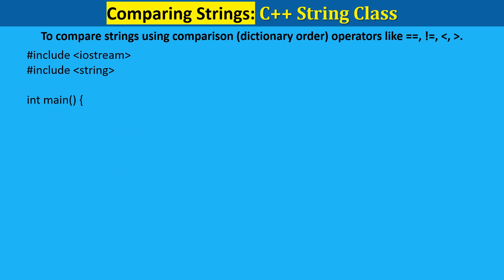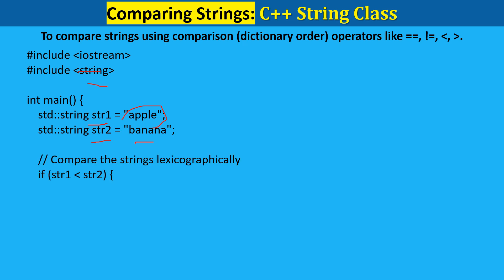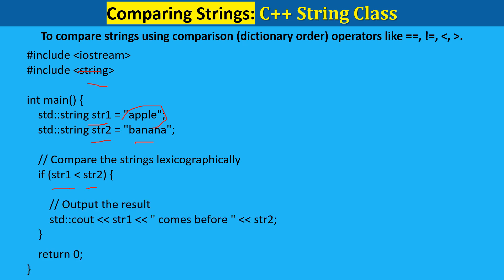Comparing strings — we compare strings using comparison operators in dictionary order, like equal to, less than, and greater than. Include iostream and the string library. Step 1 — declare and initialize two strings: string one = "apple" and string two = "banana". Step 2 — compare the strings: the condition string_one < string_two evaluates to true in alphabetical order, since "apple" comes before "banana". Step 3 — output the result: print "apple comes before banana" to the console.